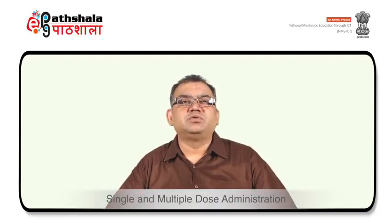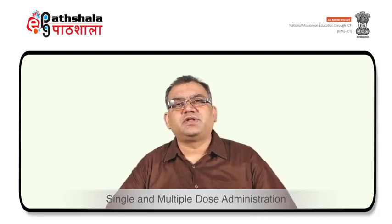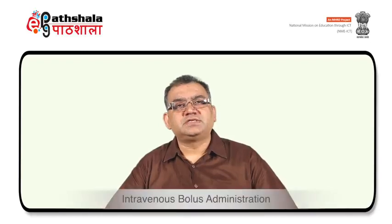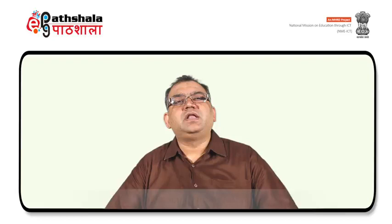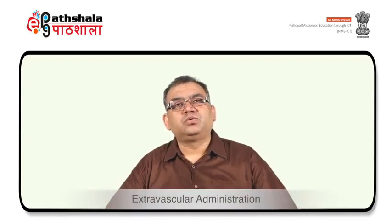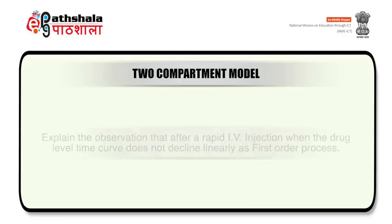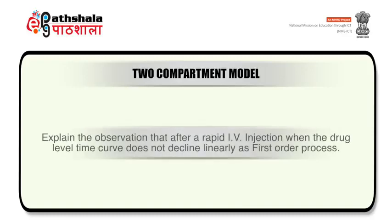In the present module, we are going to study the pharmacokinetics of single and multiple dose administration which is applied to intravenous rapid and oral administration, as well as intravenous bolus administration, intravenous infusion and extravascular administration applicable to the two compartment model. Two compartment models are generally described as multi-compartment models or delayed distribution equilibrium models. These explain the observation that after a rapid IV injection, the drug level-time curve does not decline linearly as a first order rate process, which is generally seen in one compartment models.